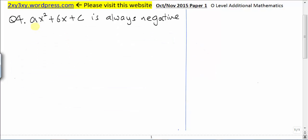We are asked to state the condition of the constant a and c for which this expression here is always negative. If we let y be this expression and plot the graph y, it will help us to understand the question better.